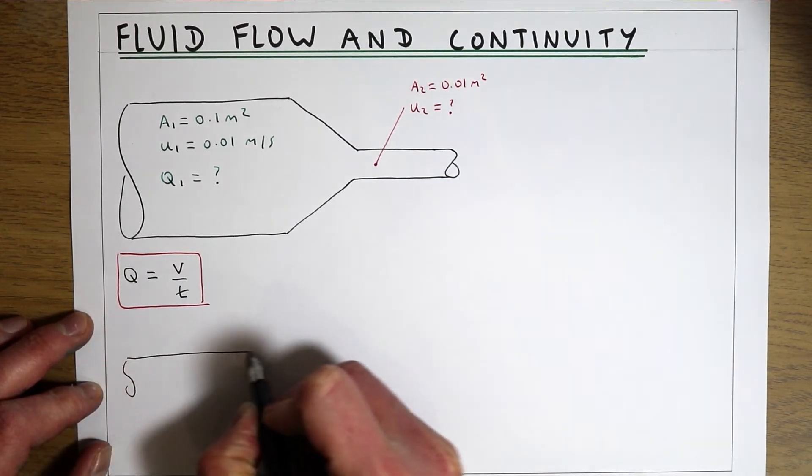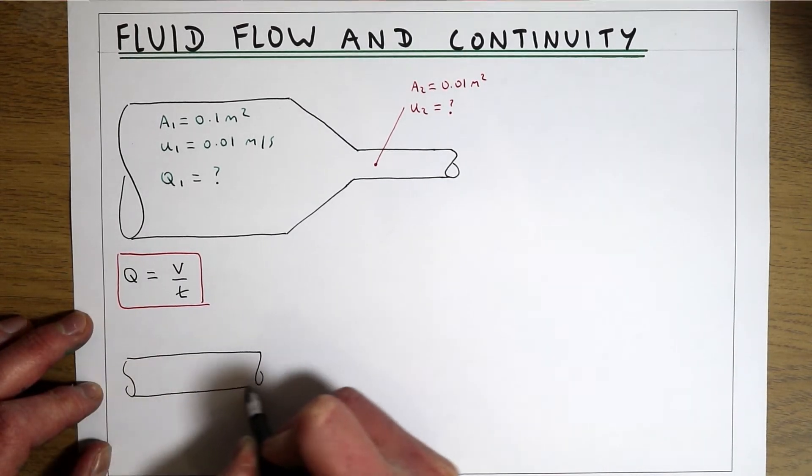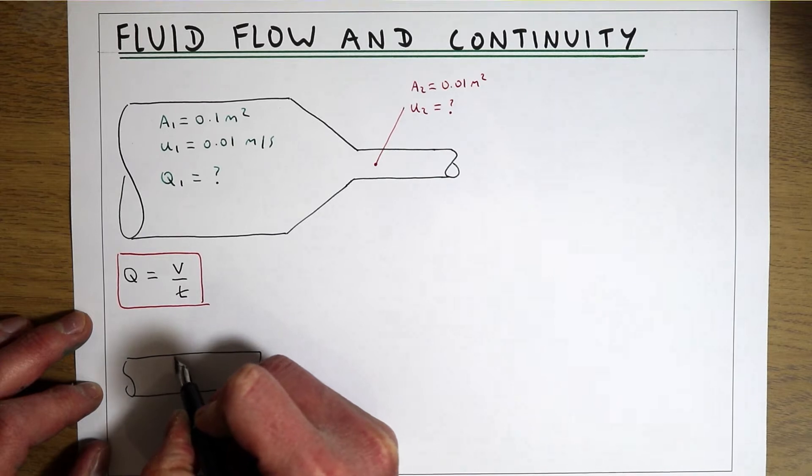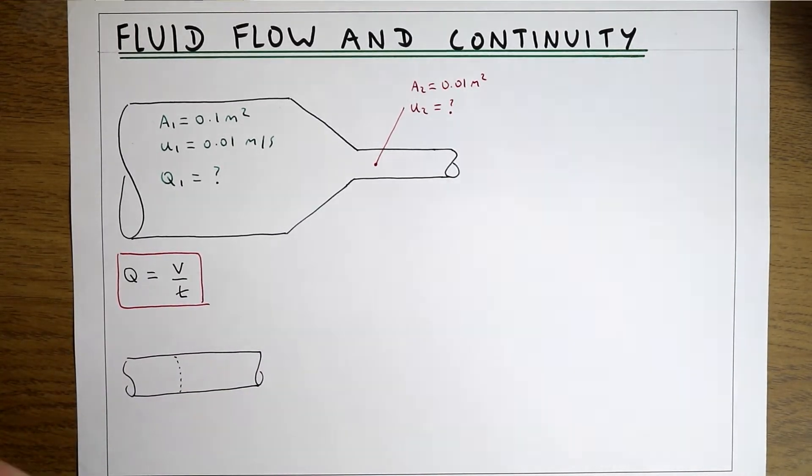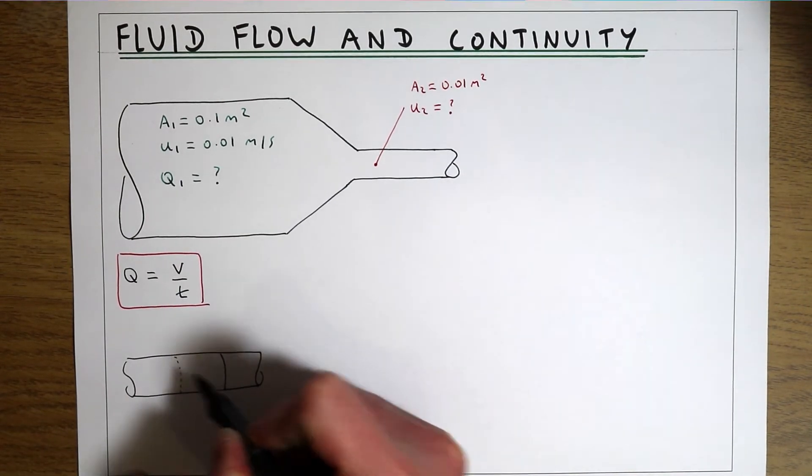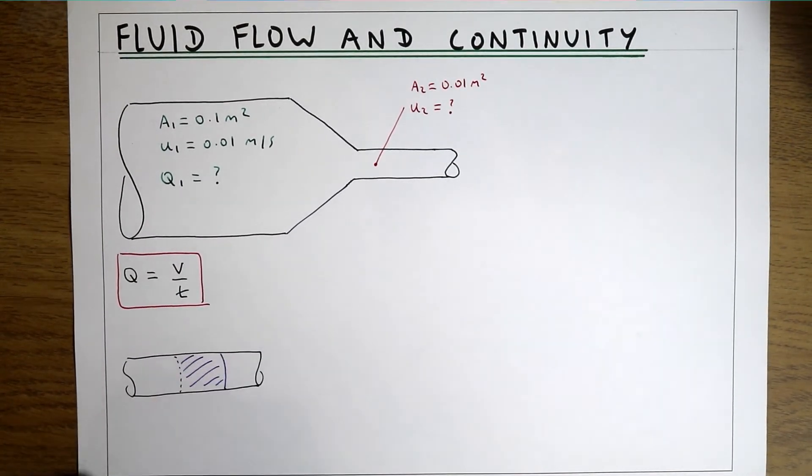If you think about what that means in a pipe, what we're basically doing is saying in a particular period of time how much fluid is moving past that point in the pipe. So if you wanted to calculate that...